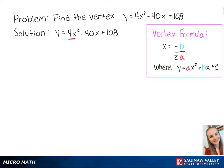For this equation, a is equal to 4 and b is equal to negative 40. We can plug these numbers into the formula to give us x equals negative negative 40 over 2 times 4,